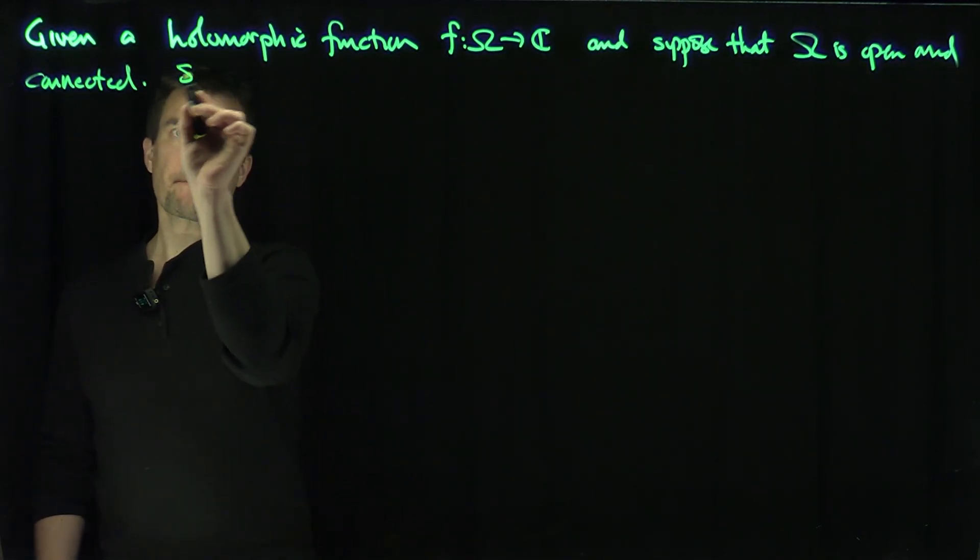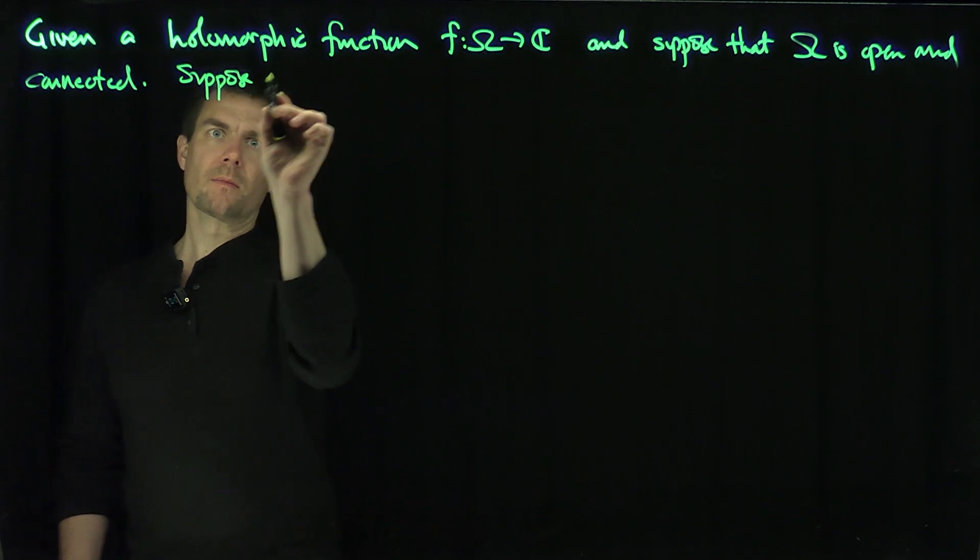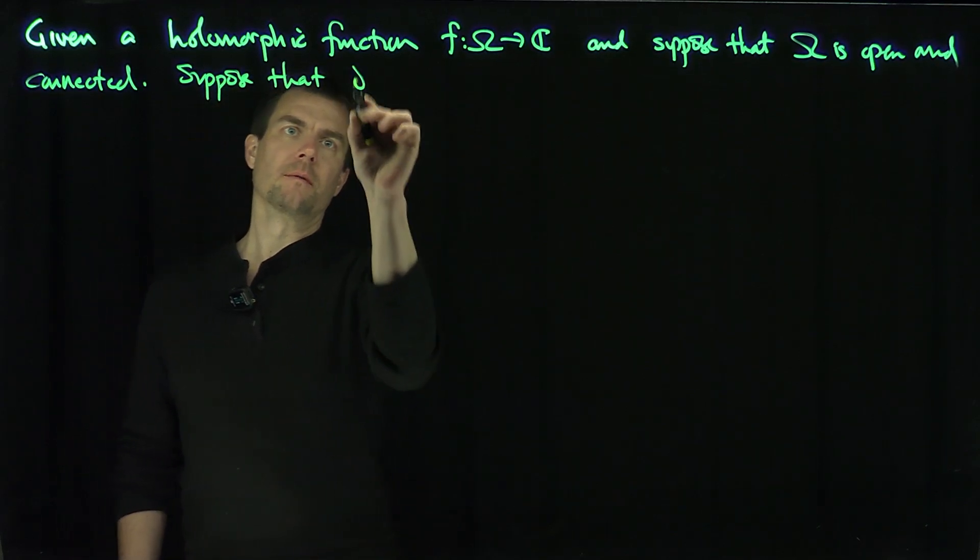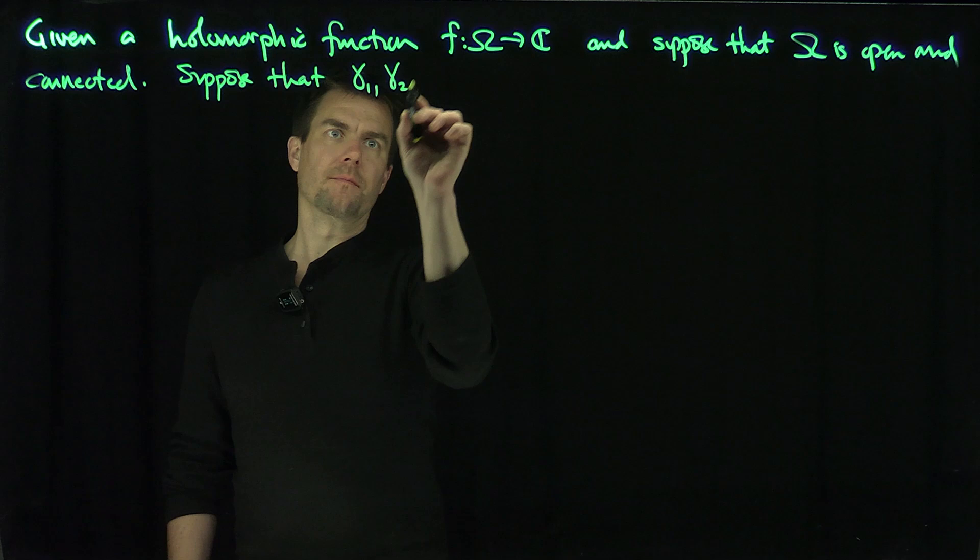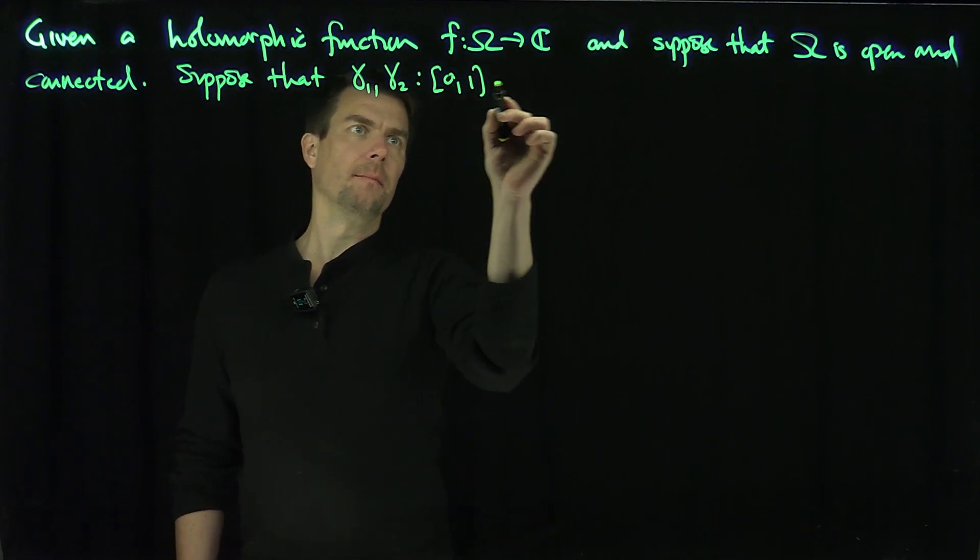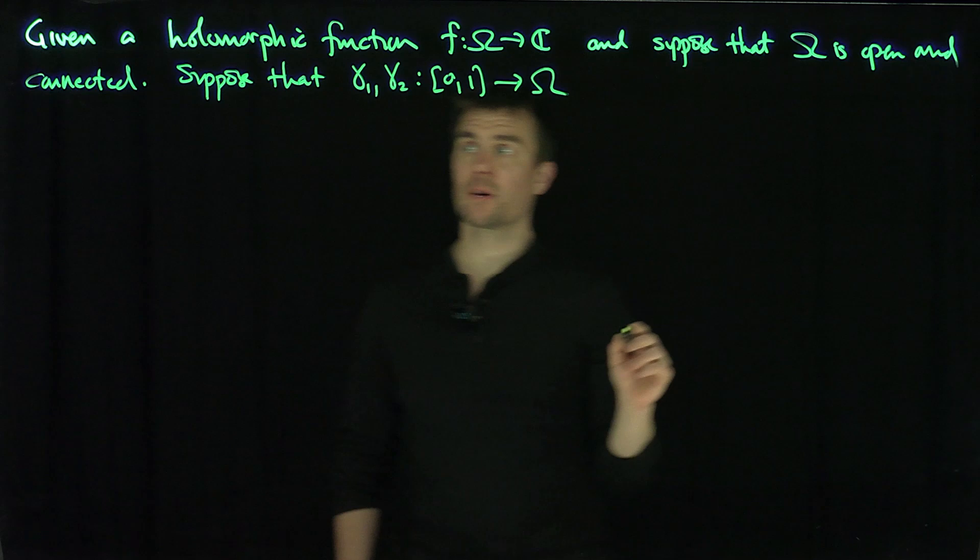And suppose that gamma1 and gamma2 map [0,1] into omega are two closed homotopic curves.